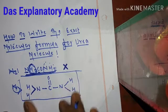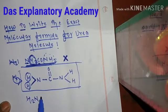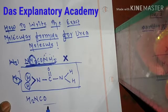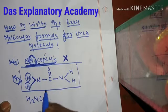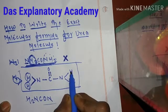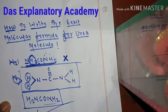So according to this structure, if you write the formula by putting two hydrogen atoms first, then the nitrogen atom, then C double bond O — written in condensed form — and then after CO comes the nitrogen atom followed by two hydrogen atoms at the extreme right, that gives the correct molecular formula for urea.